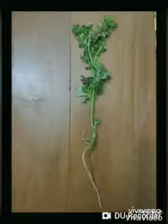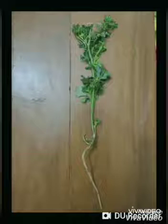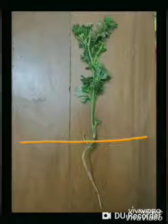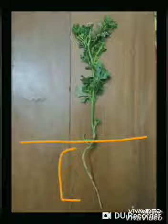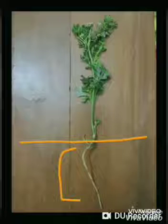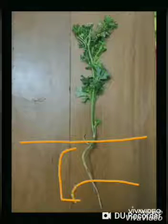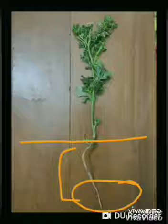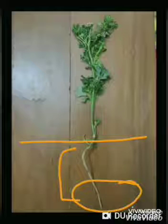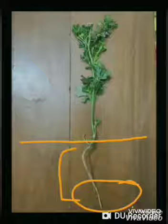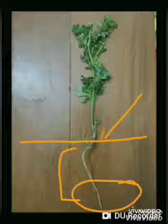This is a coriander plant. Children, can you see the root of this plant is completely different from the roots of the onion plant. You can see below the root there are many roots which are attached to the main root. Such type of root is called a tap root. It is a single root which is attached to the end of the stem.